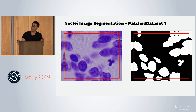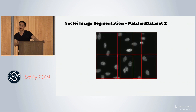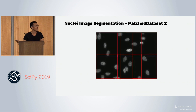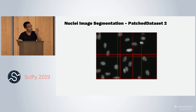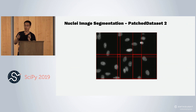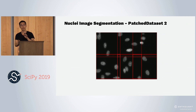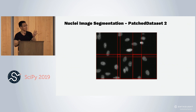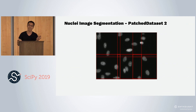Our dataset is not all square images, so we have to do patching. Sometimes our patches will overlap. It's very important that you don't use the same image in your training set and validation set when you do patching. So it's a good idea to split your images first, and then patch.